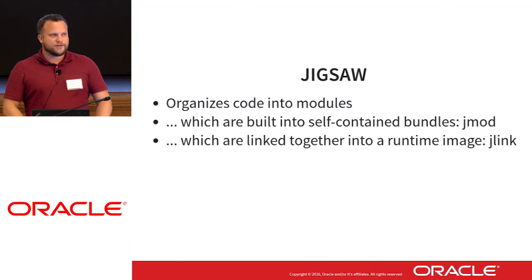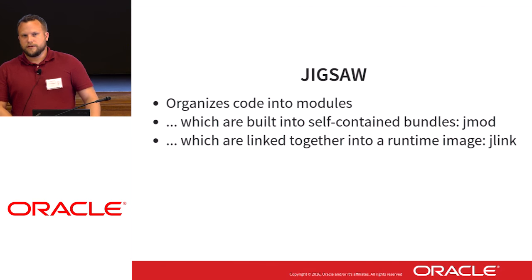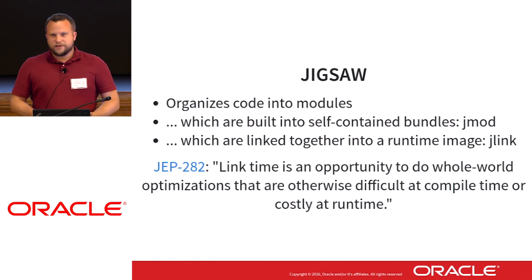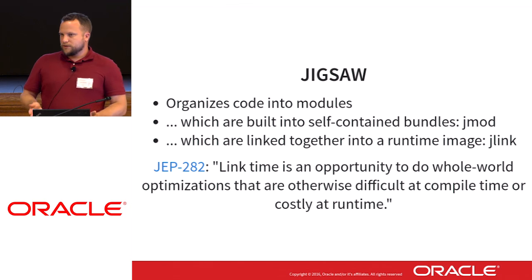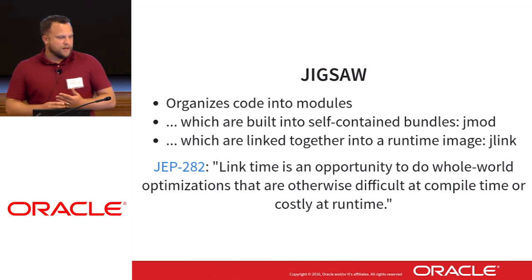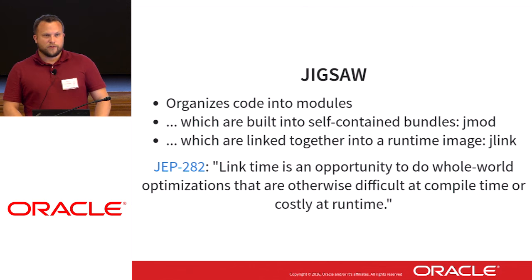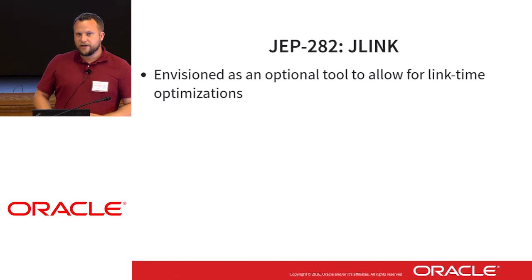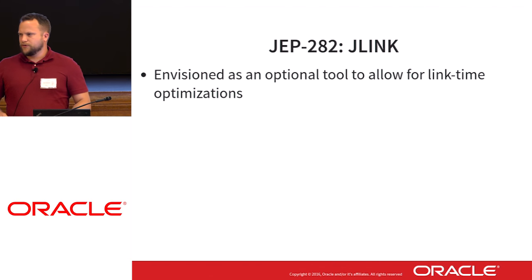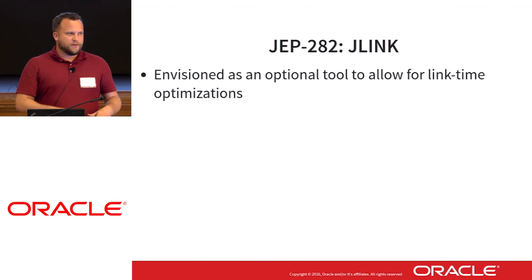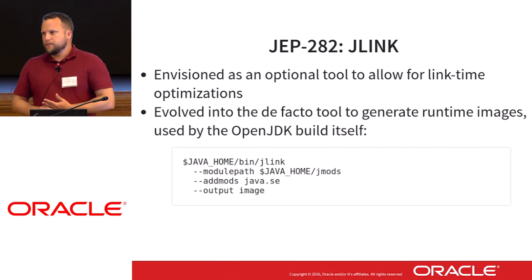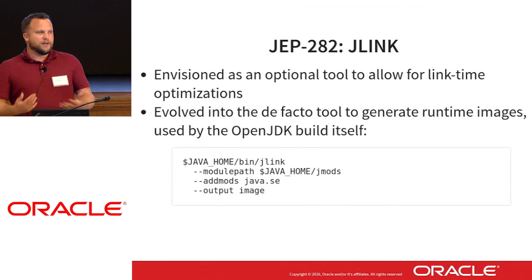These jmods are then linked together into a runtime image with the J-Link tool. One of the stated goals of the J-Link tool in JEP 282 was to provide an opportunity to do whole-world optimizations that are otherwise difficult at compile time or costly at runtime. At the time, J-Link was envisioned as an optional tool for link-time optimizations, but has since grown into the de facto tool for generating images during build time itself.